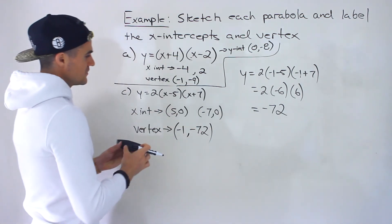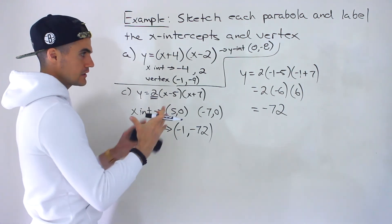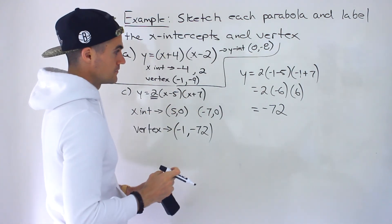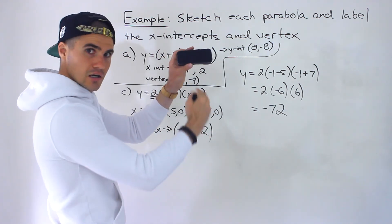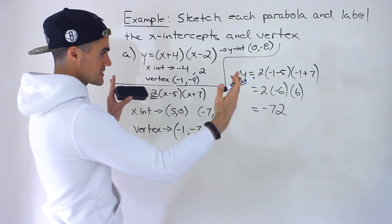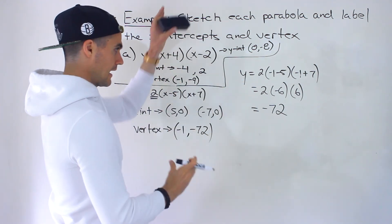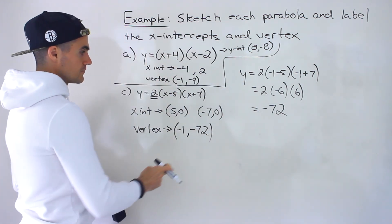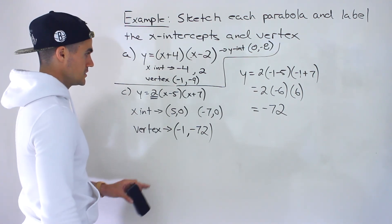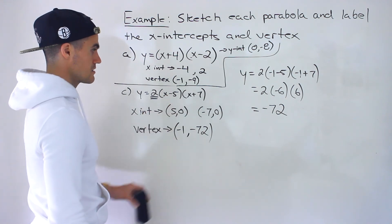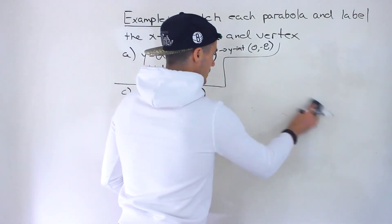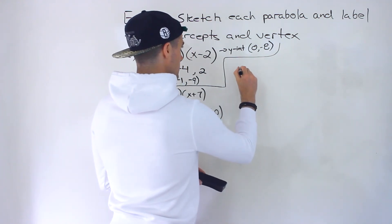So the vertex is at negative 1 comma negative 72 — a fairly large negative y-value. The reason is because of the 2 coefficient, the a-value. Remember what this does: it vertically stretches the parabola, making it less wide and taller, hence why we're getting bigger numbers. Let's also get the y-intercept. Plugging in 0 gives 2 times negative 5 times 7, which is 2 times negative 35, equaling negative 70.